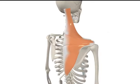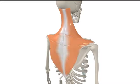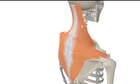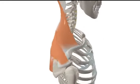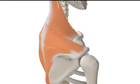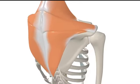From this origin, we have superior, middle, and inferior fibres. The superior fibres are inserted into the posterior border of the lateral third of the clavicle. The middle fibres insert into the medial margin of the acromion. The inferior fibres converge into an aponeurosis which inserts on the scapular spine more medially.